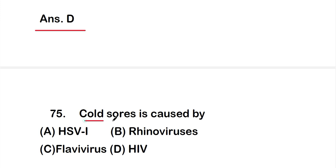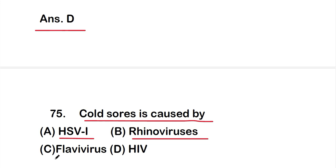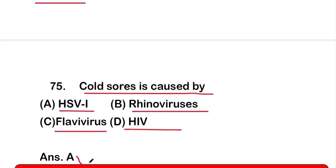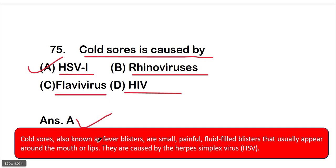Question number 75: Cold sores are caused by — option A: HSV-1, option B: rhinoviruses, option C: flavivirus, or option D: HIV. The correct answer is option A, HSV-1. Cold sores, also known as fever blisters, are small painful fluid-filled blisters that appear around the mouth or lips. They are caused by the herpes simplex virus (HSV).